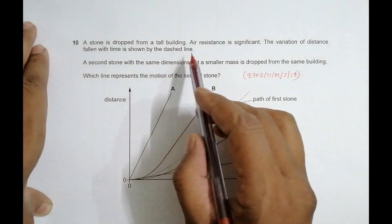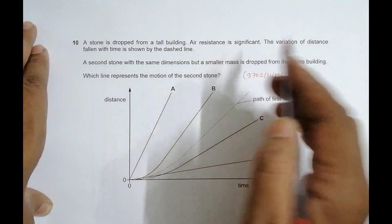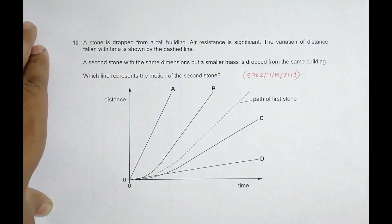A stone is dropped from a tall building where air resistance is significant, so air resistance affects the motion of the body. The variation of distance fallen with time is shown by the dashed line.